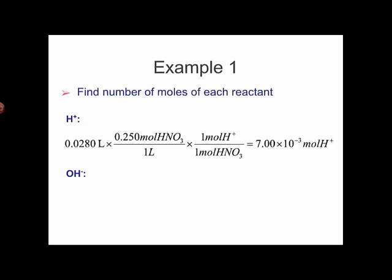That's because HNO3 is a monoprotic acid. It produces 1 mole of H-plus per mole of the acid. That gives us 7.00 times 10 to the minus 3 moles of H-plus.